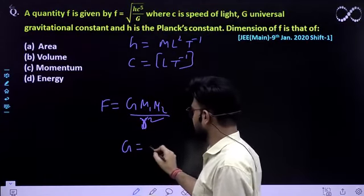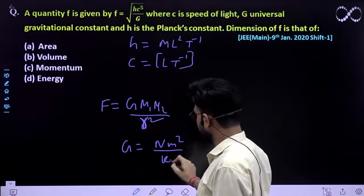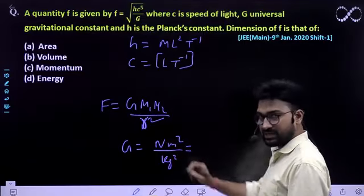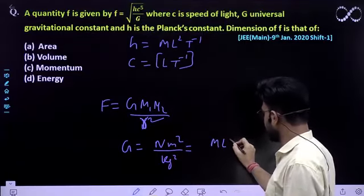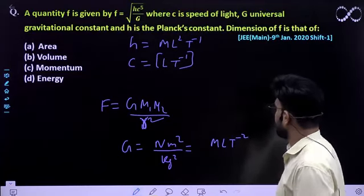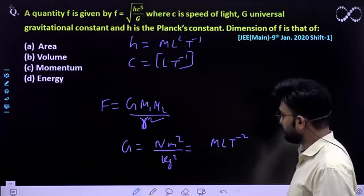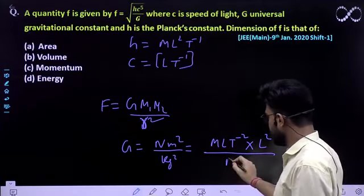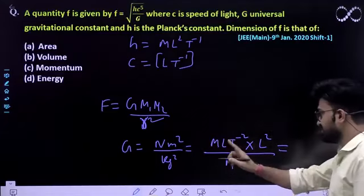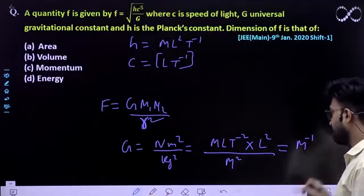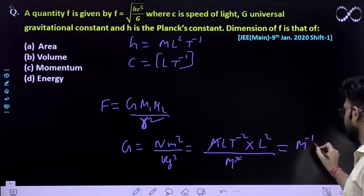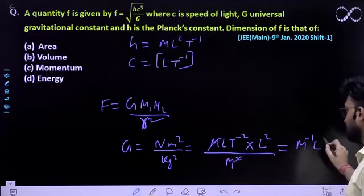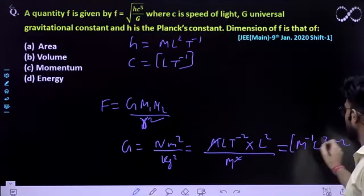So, G ka unit kitna hoga? Newton meter square by kg whole square. Force ka dimension kitna hota hai? MLT⁻². This is the dimension of force multiplied by meter ka whole square, length ka whole square, niche mein m ka whole square. To aapka G ki value bhi aa jaayegi. G ki value comes out to be M⁻¹L³T⁻².